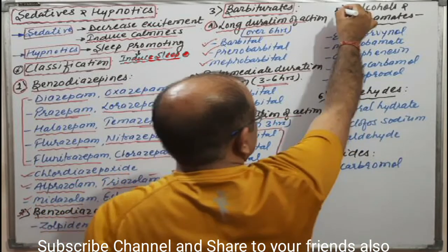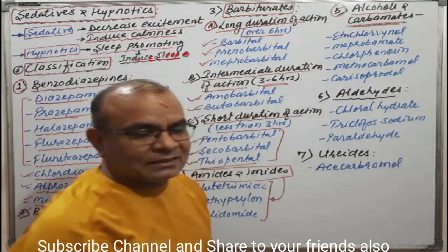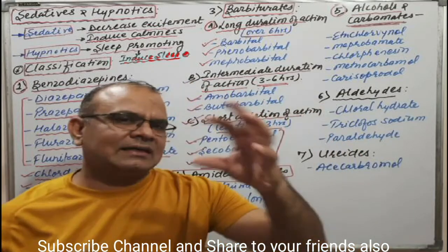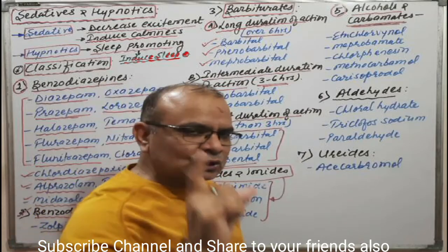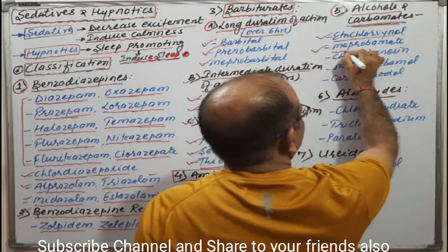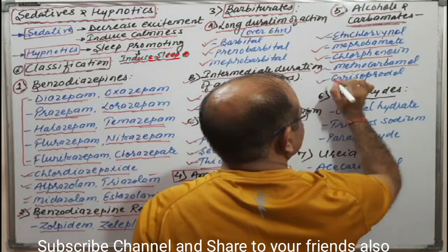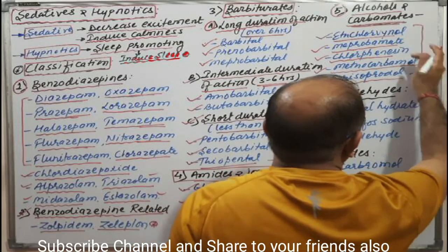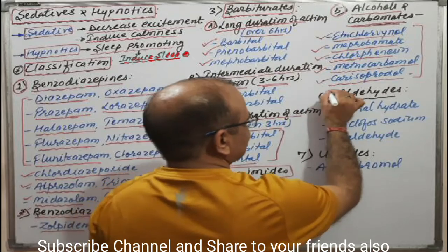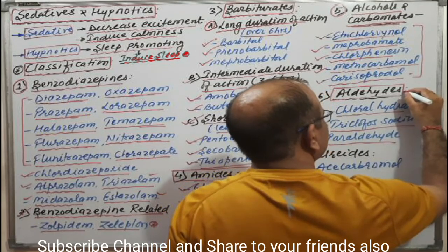The fifth category is alcohols and their carbamates. Examples include ethchlorvynol (first), meprobamate (second), chlorphenesin (third), methocarbamol (next), and carisoprodol (last). These are the alcohols and carbamates which belong to the sedative and hypnotic category.